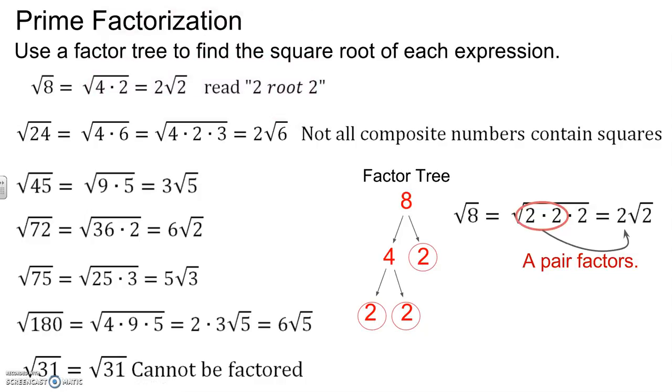Lastly, the square root of 31 does not simplify because 31 is a prime number. So any prime numbers you have, unless there's a pair, will not factor.